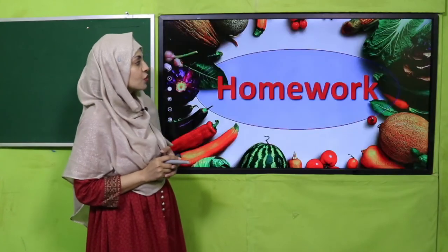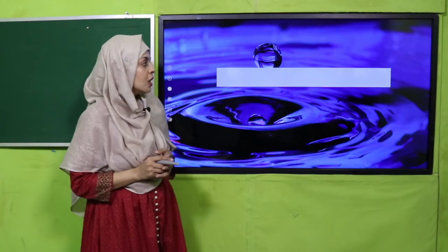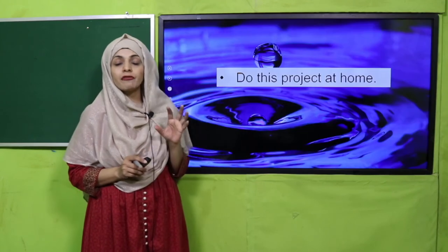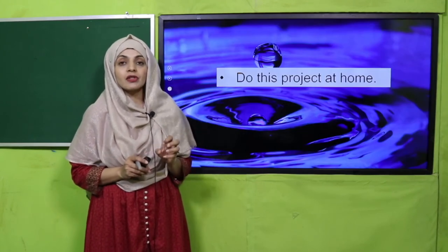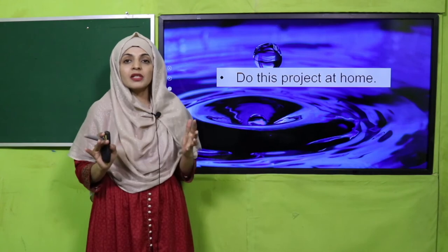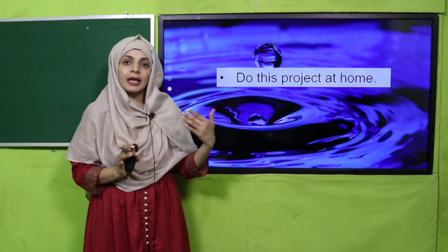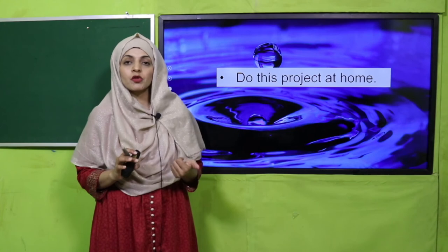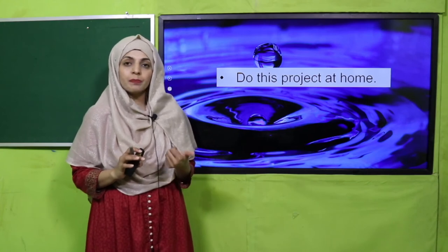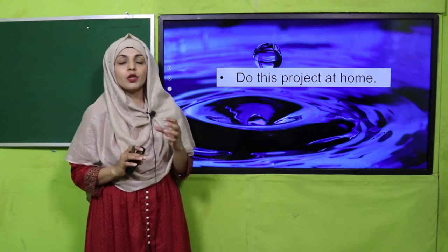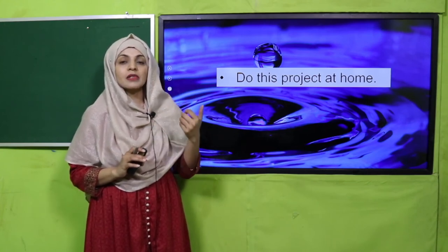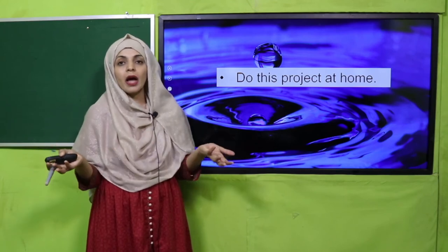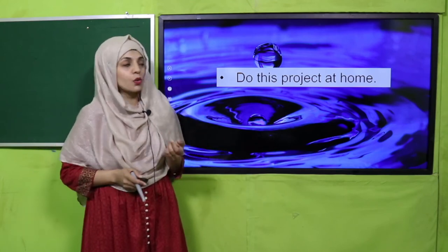For homework, do this project at home. You need to build your own filtration system — all the materials are easily available at home or nearby. You don't need to buy anything special: a disposable plastic bottle, plastic cups, sand, small gravels, and large gravels — and then you can make your own filtration plant at home.